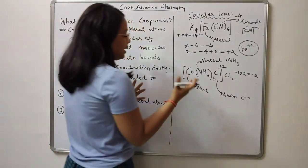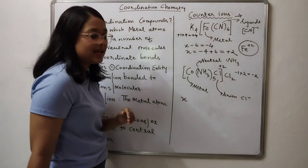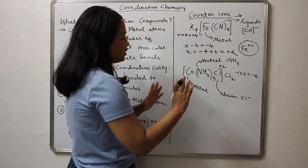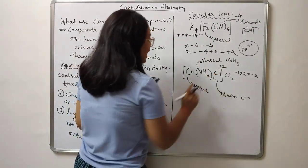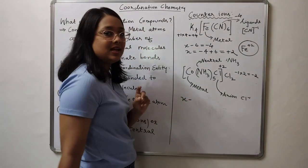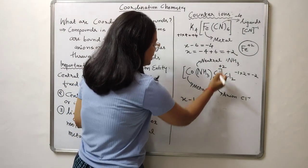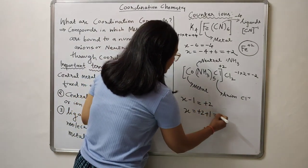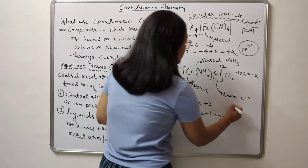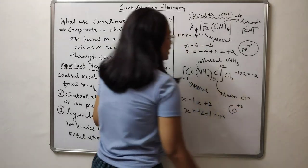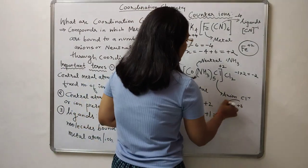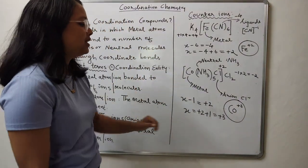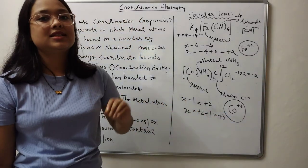In the second example, let x be the charge on cobalt. Ammonia is a neutral ligand and does not carry any charge. There is one chloride ligand carrying a charge of minus 1. The overall charge on the complex is plus 2. So x minus 1 equals plus 2, meaning x equals plus 3. Cobalt carries a charge of plus 3. In the first example iron is plus 2 (ferrous), and in the second the oxidation state of the metal is plus 3.